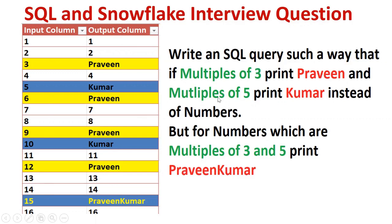In a similar fashion, multiples of five — in the sense like five, 10, 15 — so when we have multiples of five, I need to print as Kumar.